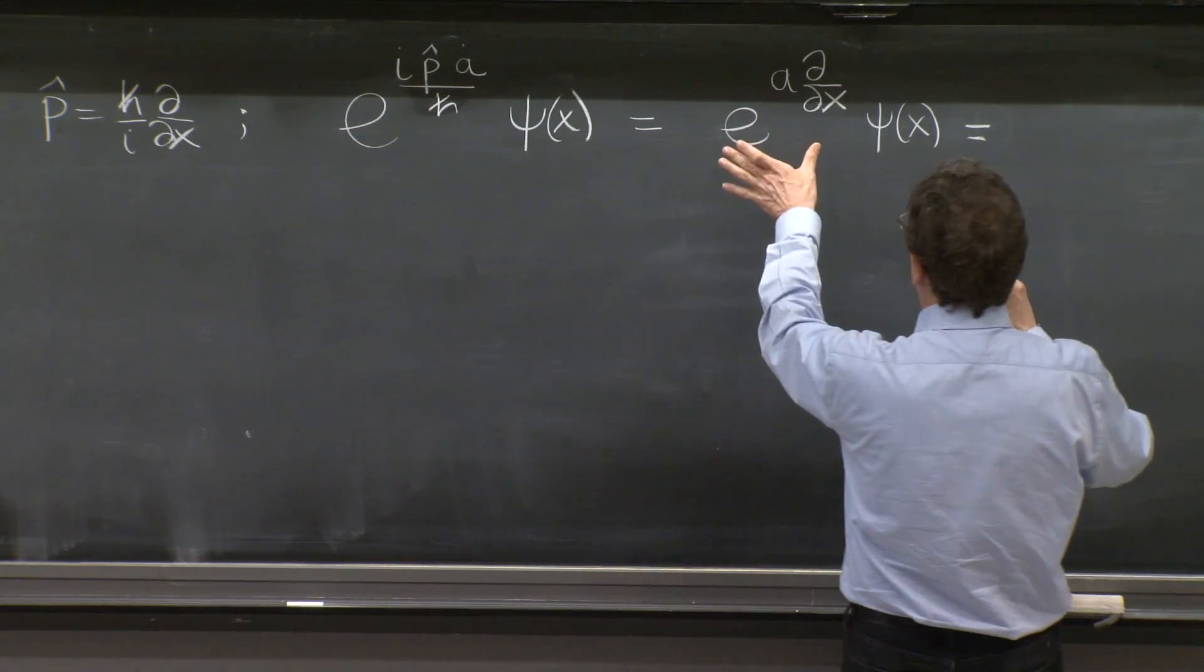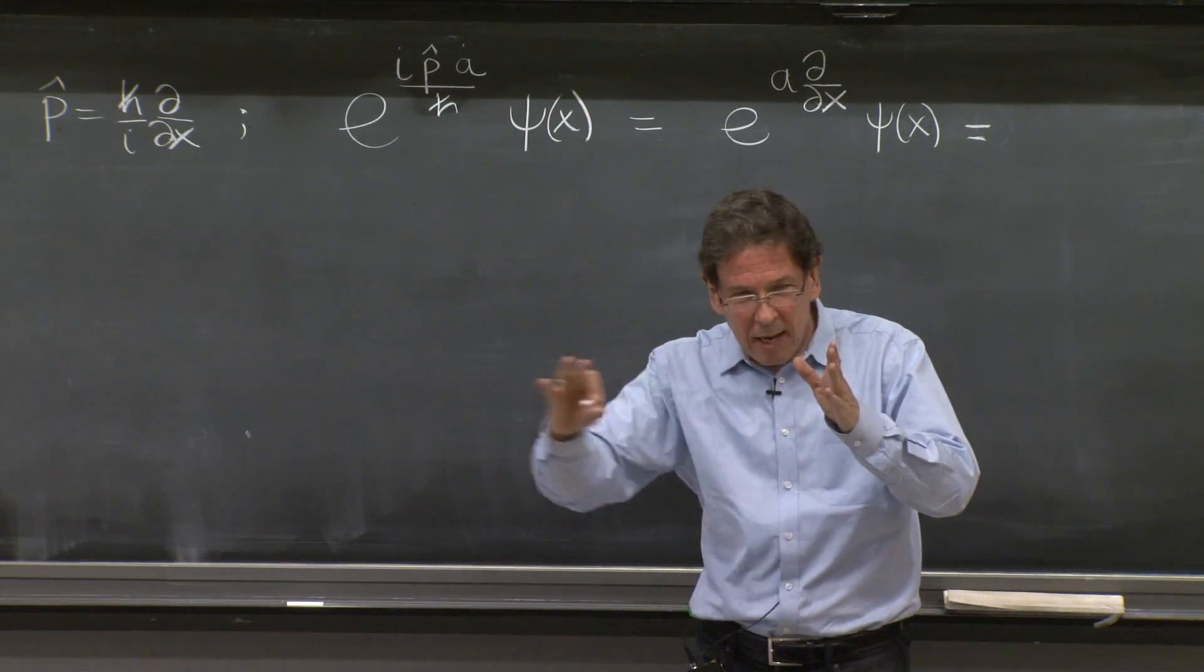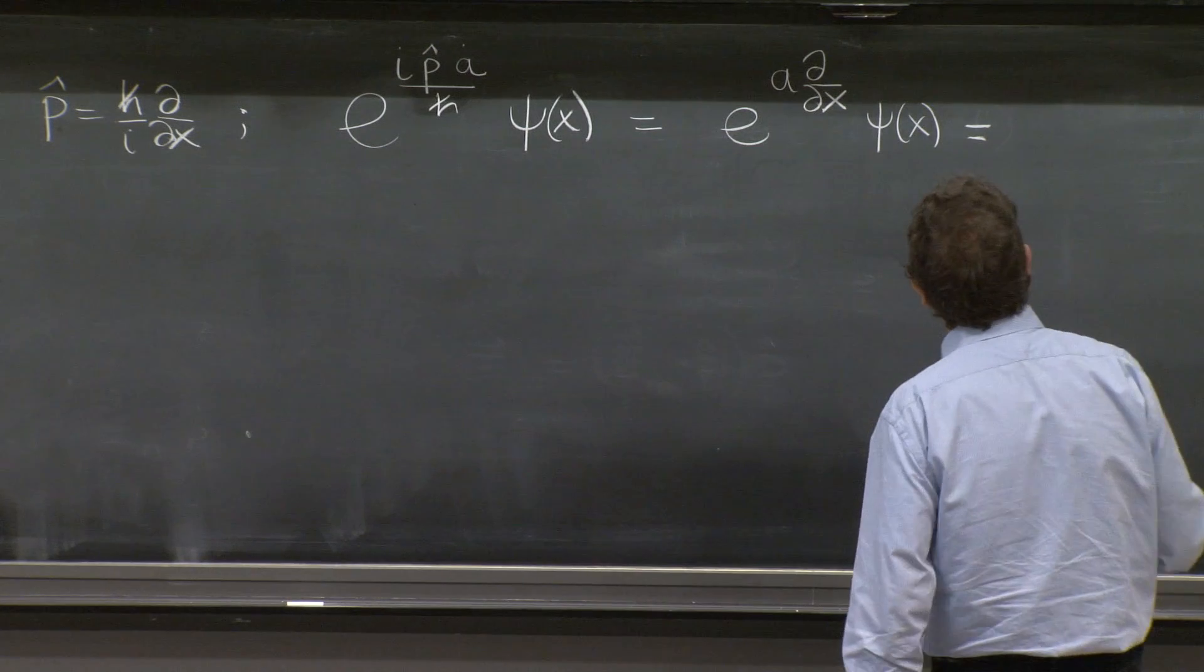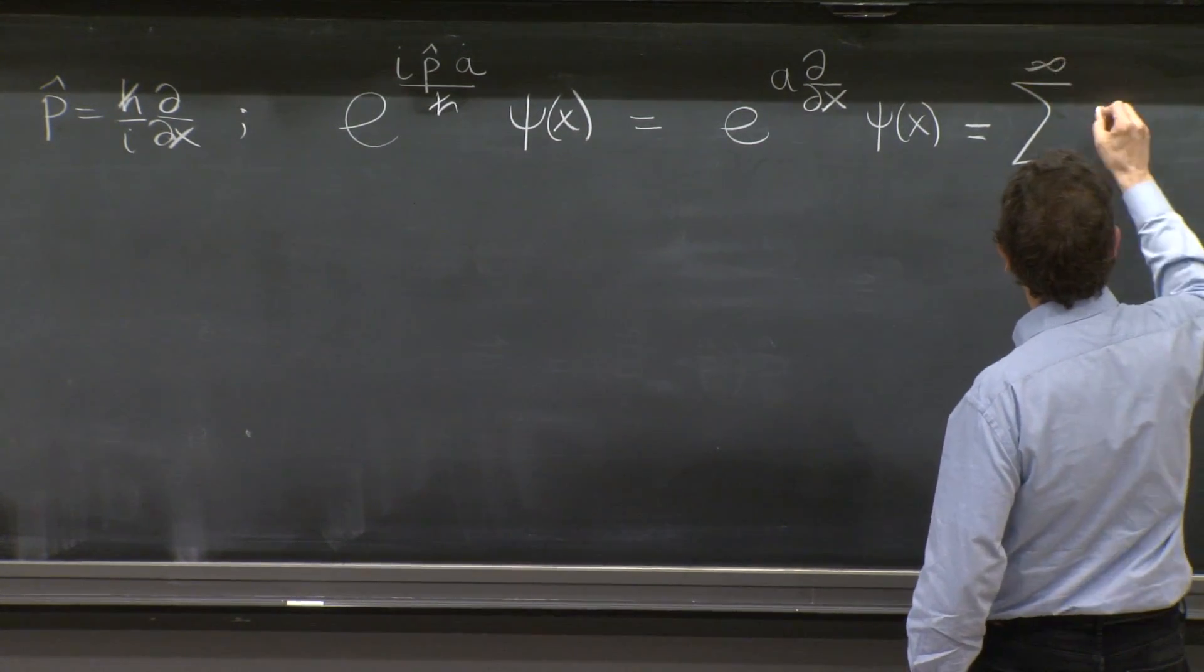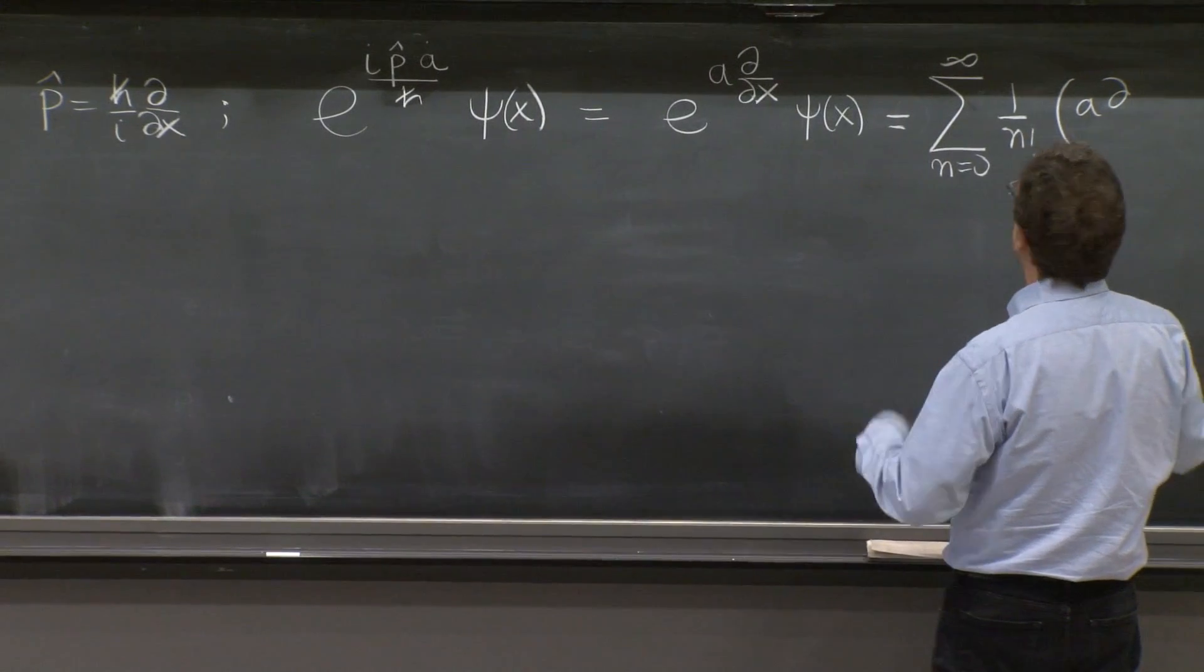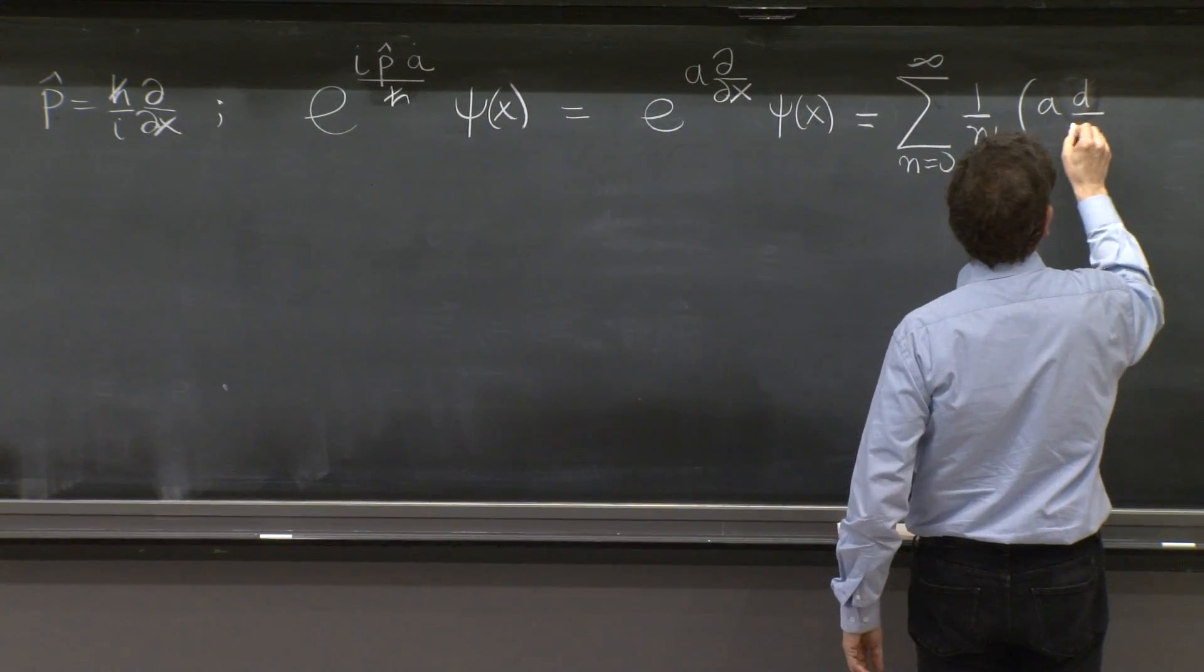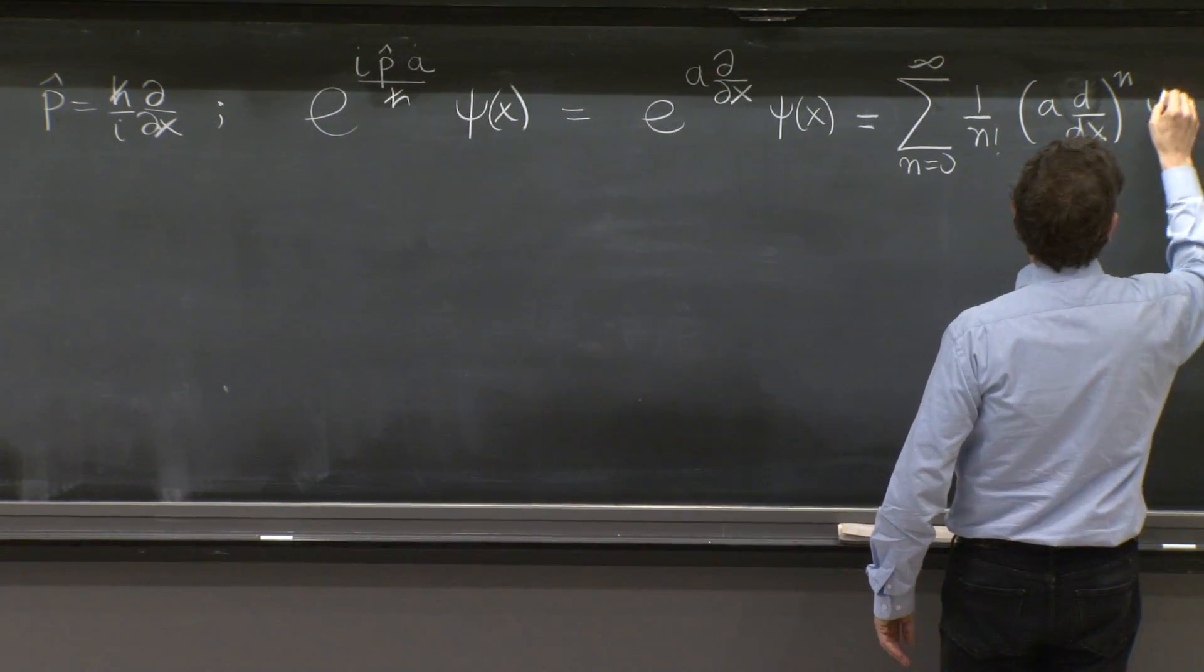And as an exponential, it can be expanded in a Taylor series with this funny object there. But it would be the sum from n equals 0 to infinity, 1 over n factorial, a d dx. I will write it as normal derivatives, because we just have a function of x. a d dx to the n psi of x.